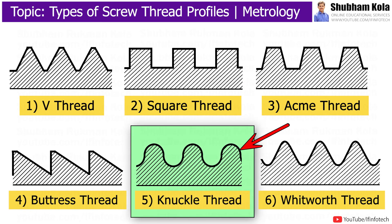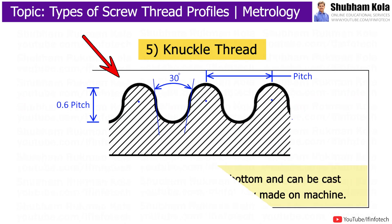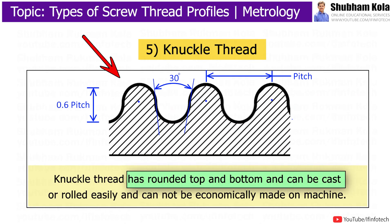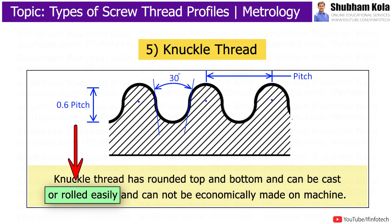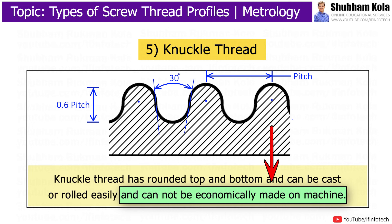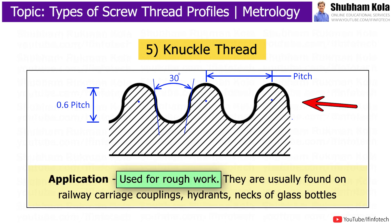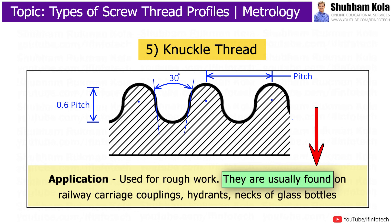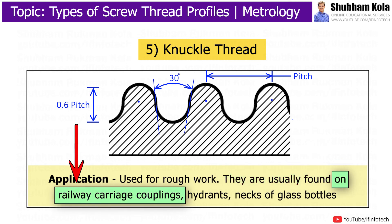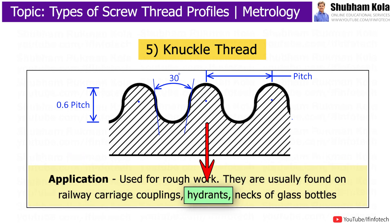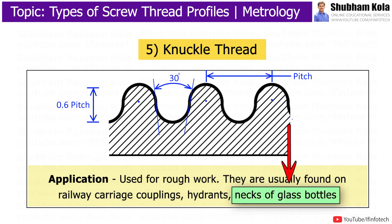Next is Knuckle thread, which has a rounded top and bottom and can be cast or rolled easily, but cannot be economically made on a machine. These threads are used for rough work. They are usually found on railway carriage couplings, hydrants, and the neck of glass bottles.